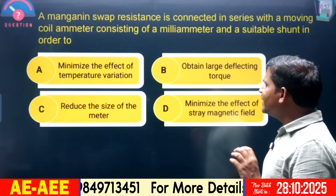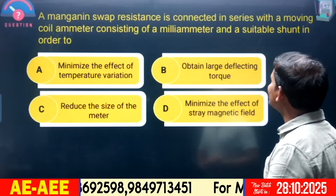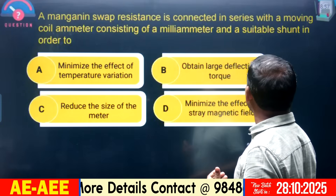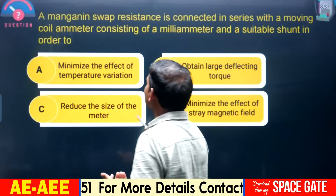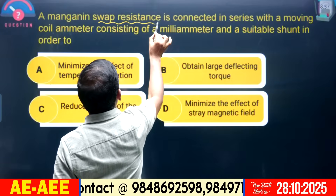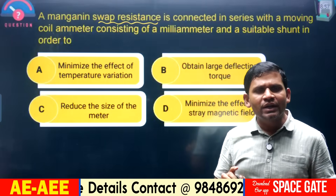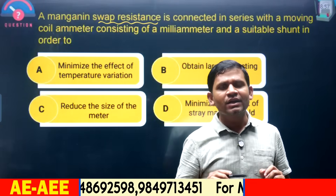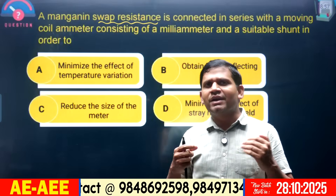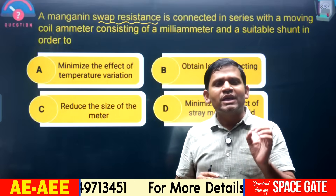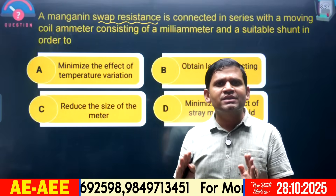This is a simple question about temperature error minimization in ammeters. A manganine swamping resistance is connected in series with a moving coil ammeter — consisting of a milliammeter and a suitable shunt — in order to achieve a specific purpose. Swamping resistance is used in ammeters only, either DC or AC ammeters. In voltmeters, the series multiplier resistance itself acts as a swamping resistance. A swamping resistance is manganine-copper combined in a 20:1 or 30:1 ratio.